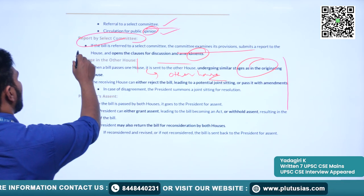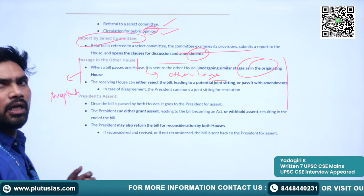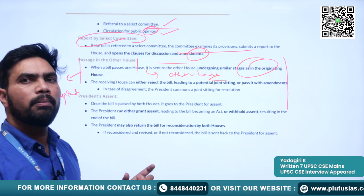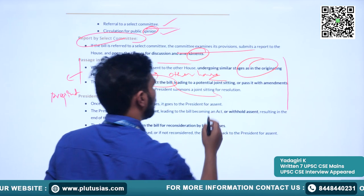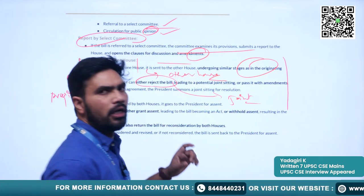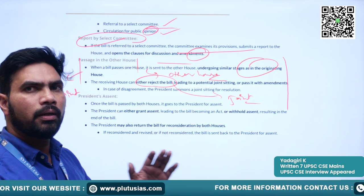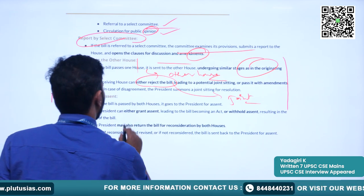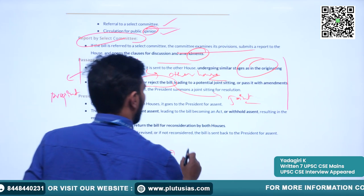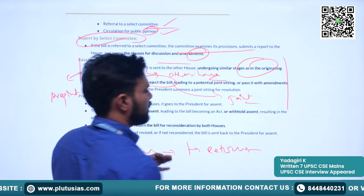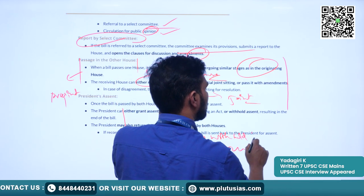In the second house, the bill goes through the same process. If both houses of Parliament pass the bill, it will be submitted to the president for consideration. If the president gives his assent, that bill becomes an act. If one house accepts the bill and the other rejects it, this will lead to a joint sitting if it is an ordinary bill. For a constitutional amendment bill, there is no provision for joint sitting and the bill remains rejected.